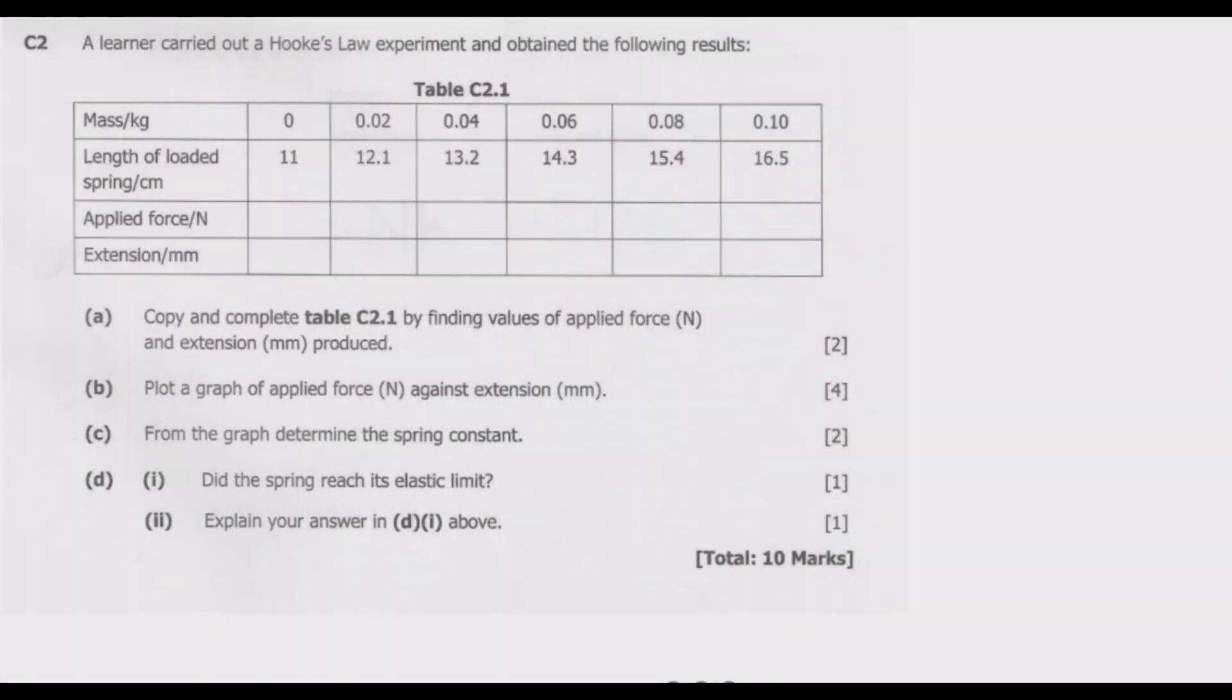Welcome viewers to another episode on SUG 12 exams. In this episode we continue looking at the 2020 science paper 1. A learner carried out a Hooke's Law experiment and obtained the following results. Copy and complete table C2.1 by finding values of applied force N and extension in millimeter produced. So basically if you look at the question, we need to find applied force.